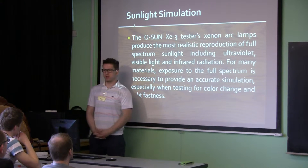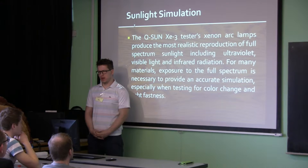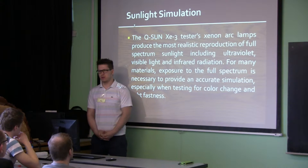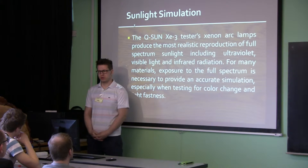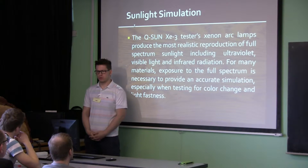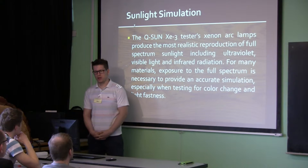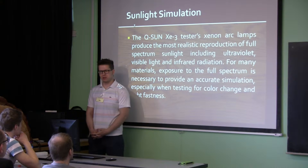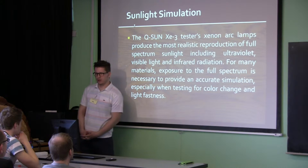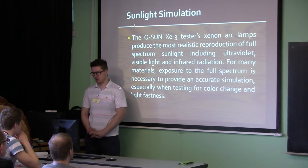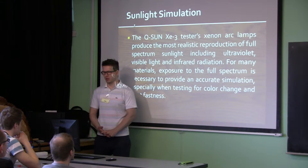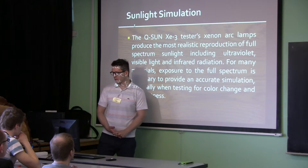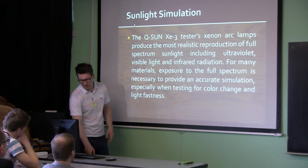These are the sensors of light and the black panel sensor of temperature. Sunlight simulation requires Xenotest arc lamps, which produce the most realistic reproduction of the full spectrum of sunlight, including ultraviolet, visible light, and infrared radiation. For many materials, the full spectrum is necessary to provide accurate simulation, especially when testing for color change and daylight fastness.